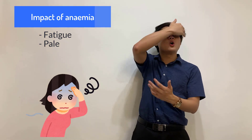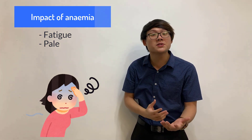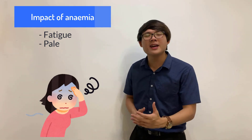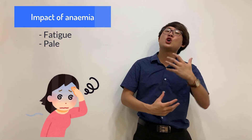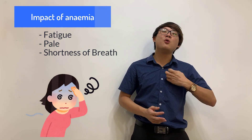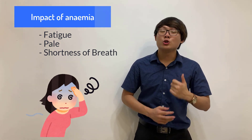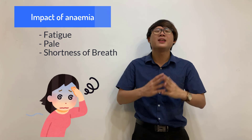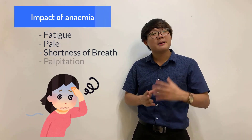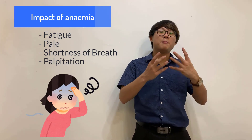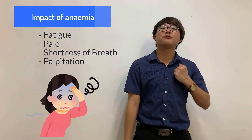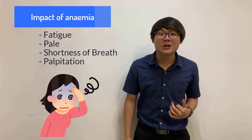Their body compensates by increasing the breathing rate. At higher levels, we call this reduced effort tolerance. So when they walk up the stairs or when they're jogging, they will feel short of breath. Furthermore, their heart will also tend to pump faster to transport oxygen to the body cells, causing what we call palpitations, which means a person notices and is aware of their own heartbeat.